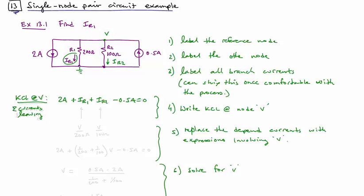We now need to express our currents through R1 and R2 in terms of the voltage across them. And so we're going to use Ohm's law, the VI terminal relationship for those elements. And write that IR1 is V over 200 ohms for R1, and IR2 is V over 100 ohms.